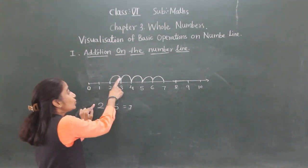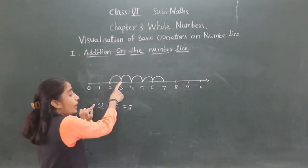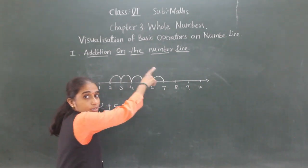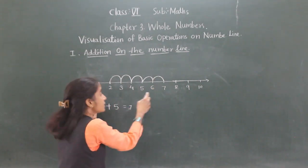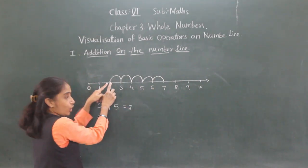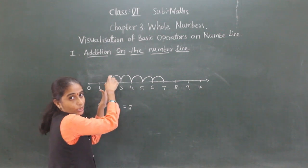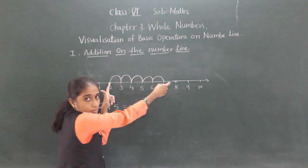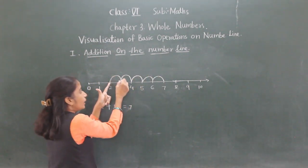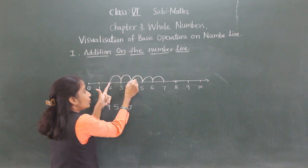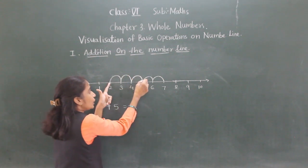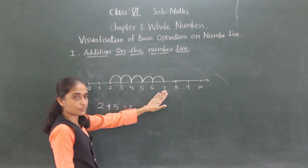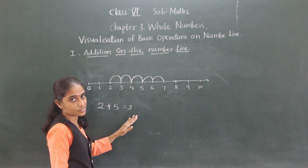Start from 2 and make 5 jumps to the right: 1, 2, 3, 4, 5. The answer is 7.